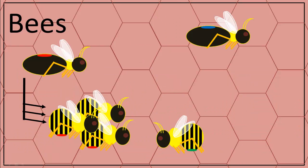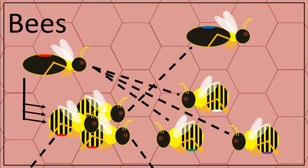To reproduce, the queen lays unfertilized eggs, which hatch into drones. These drones only carry the queen's genetic information, and they travel to other hives to mate with other queens. The queen also receives drones from other hives and mates with them. Genetic information from these drones is used to produce new queens who will take over the hive or found new hives of their own. Drones can be considered an extension of the queen, since they carry only her genetic material.